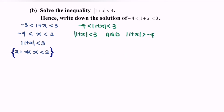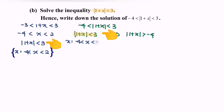Kindly focus on this part — we notice that we have solved this kind of situation previously. So the answer would be x such that x is greater than negative 4 and less than 2.